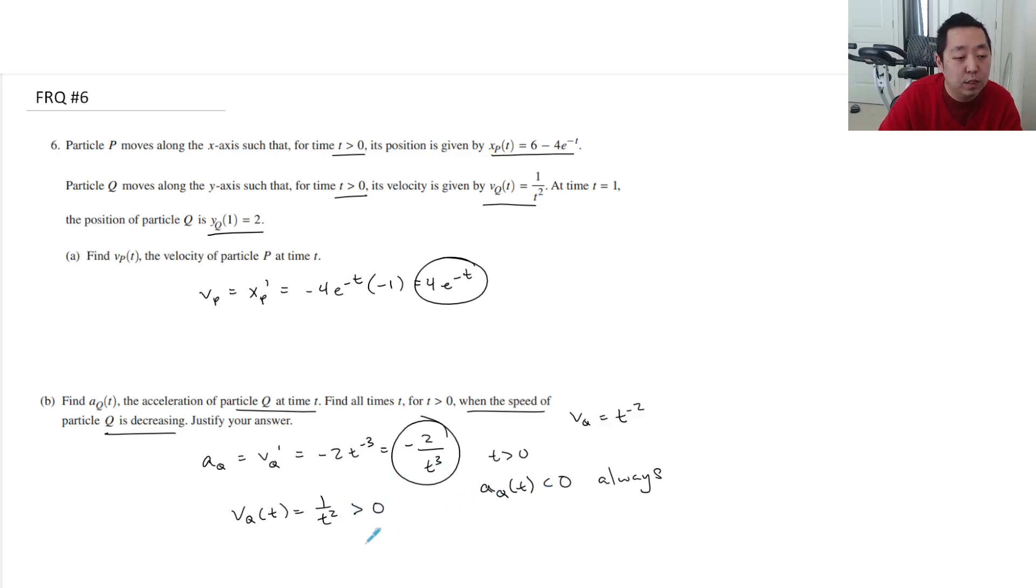Aq is always negative. So for all times, so for t greater than zero, Vq is less than zero. Aq is greater than zero. Therefore, it is always slowing down. The speed is always decreasing for t greater than zero.